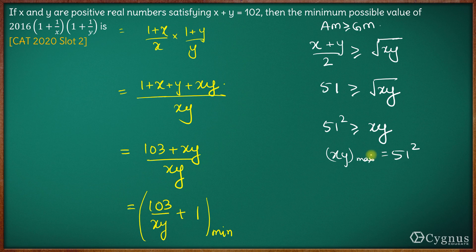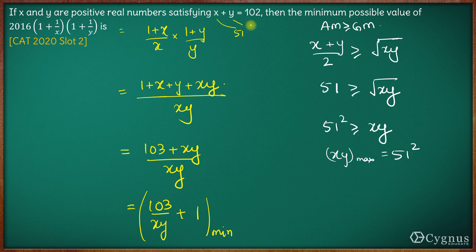When does the equality hold? The equality comes when x and y are both equal. So if x and y are both equal and x plus y equals 102, then both x and y come out to be 51.